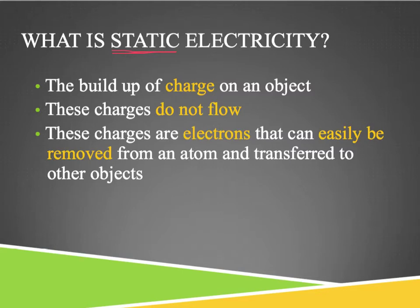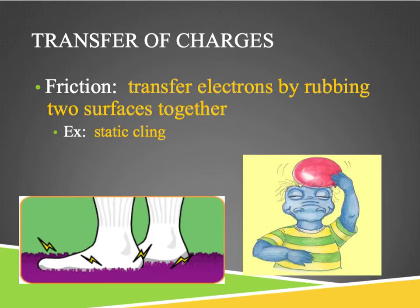These charges are electrons, so electrons are building up and they can easily be removed from the atom once given a chance to go somewhere. They're able to transfer to other objects, which explains why you feel a shock if you sit in your chair and swivel back and forth and then put your finger on something metallic or even touch another person — you feel a slight shock.